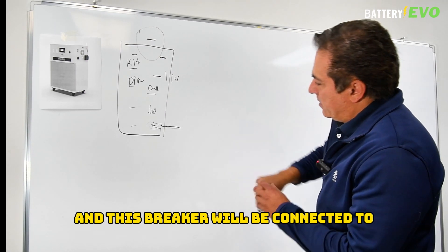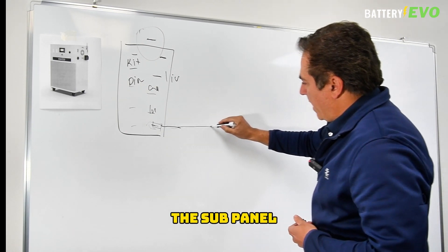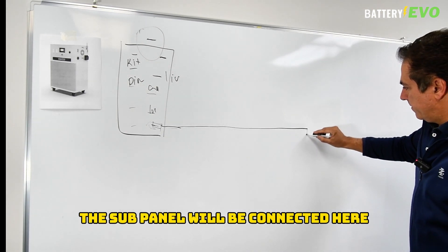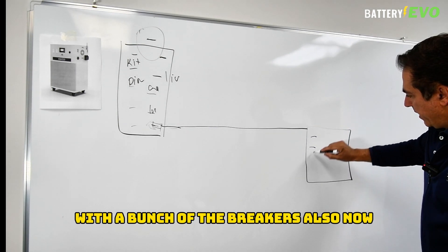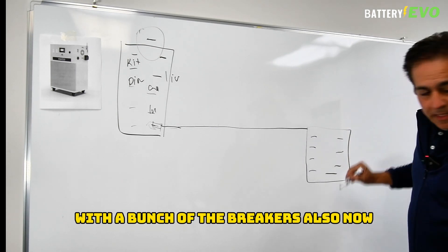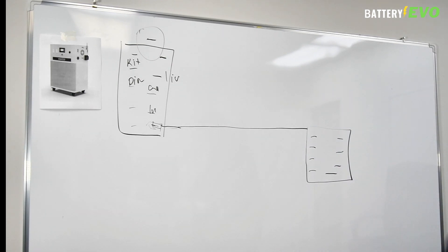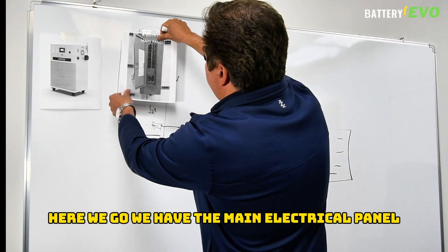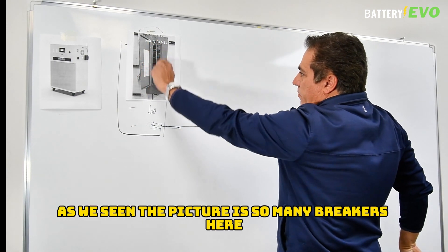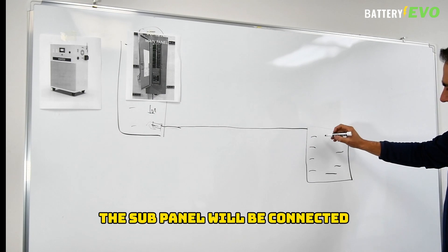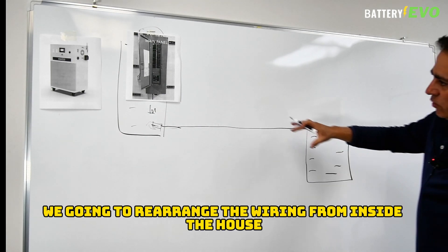The sub panel will be connected here with a bunch of breakers also. Now here you go, we have the main electrical panel as we discussed. As we see in the picture, there are so many breakers here connected to the sub panel.